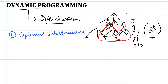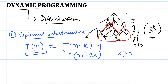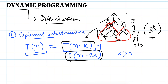Optimal substructure means that the optimal solution to a bigger problem can be achieved if we solve smaller sub-problems — for example, n minus k and n minus 2k, where k is greater than 0 and n is some bigger number. This function which depends on n: if we find the optimal solution of n minus k, which is smaller than n, and also of n minus 2k, then knowing the optimal solutions of these smaller problems allows us to find the optimal solution of the bigger problem.